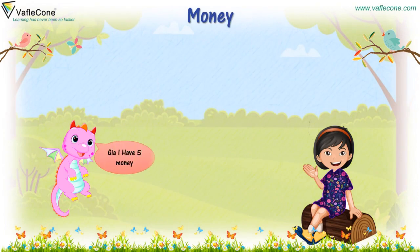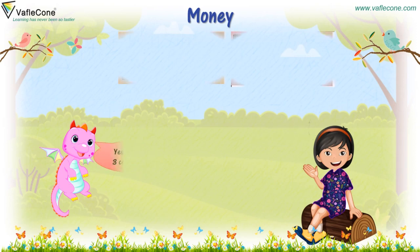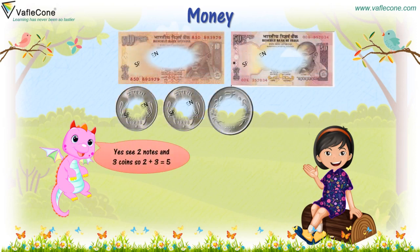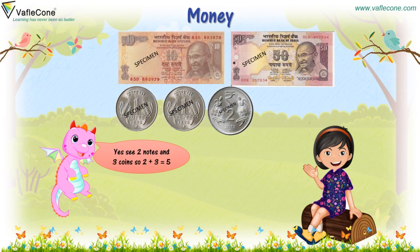Jia, I have 5 money. 5 money? Yes, see — 2 notes and 3 coins. So, 2 plus 3 is equal to 5.